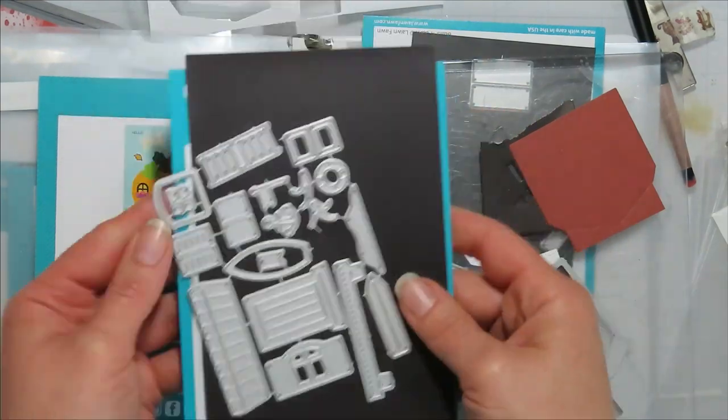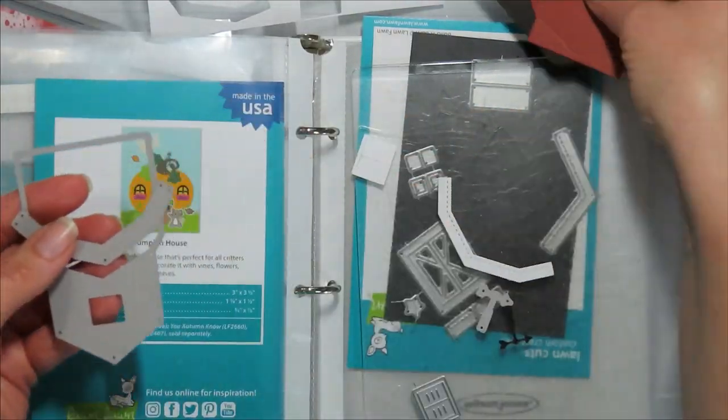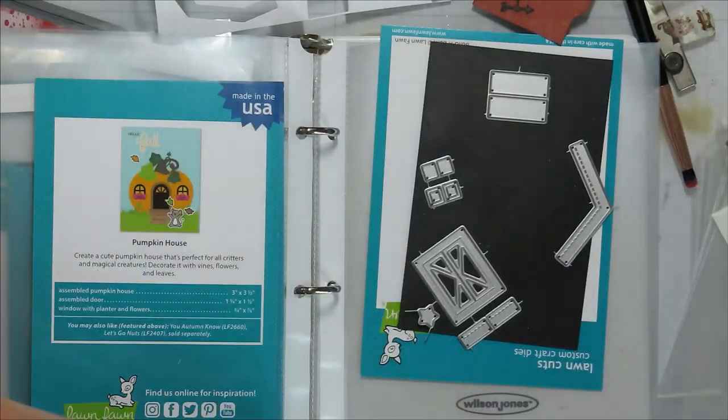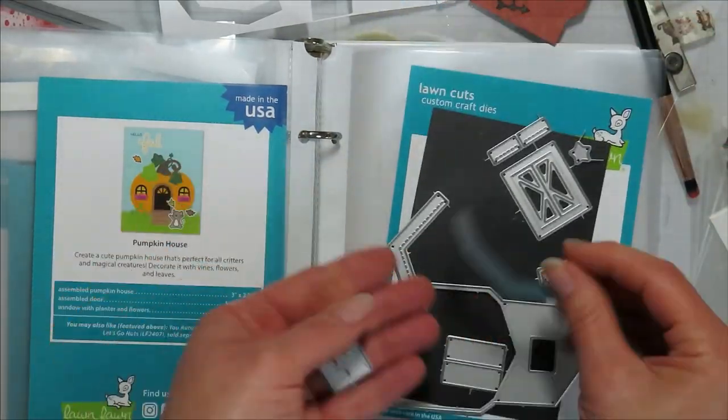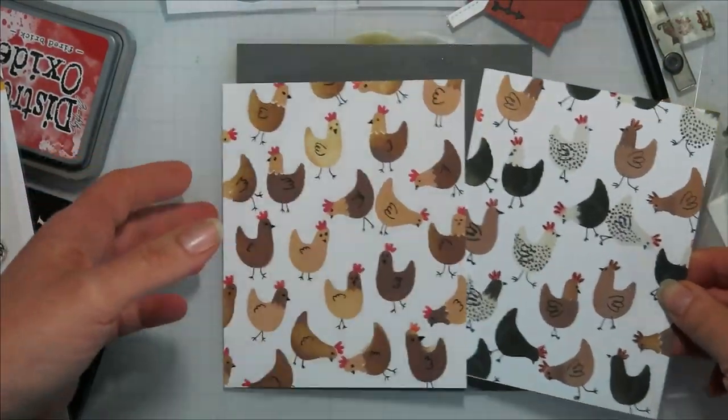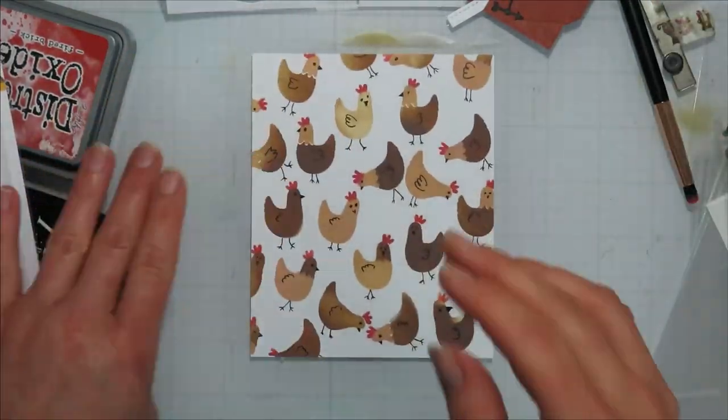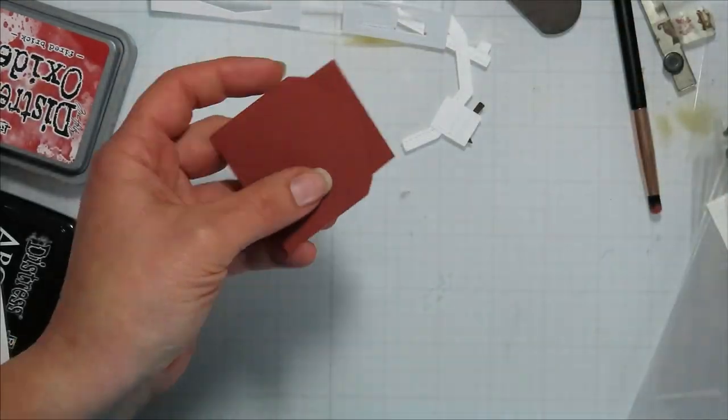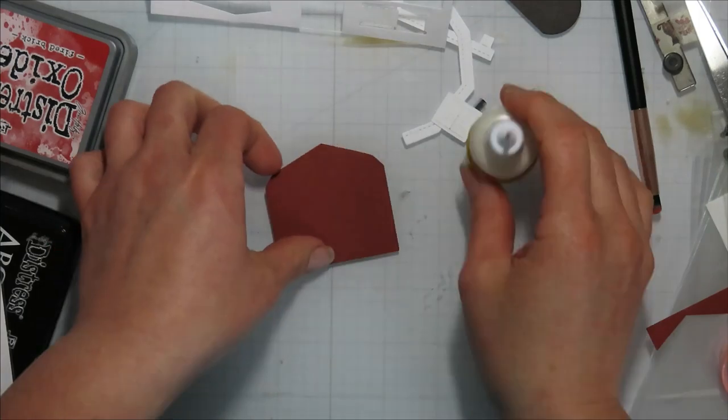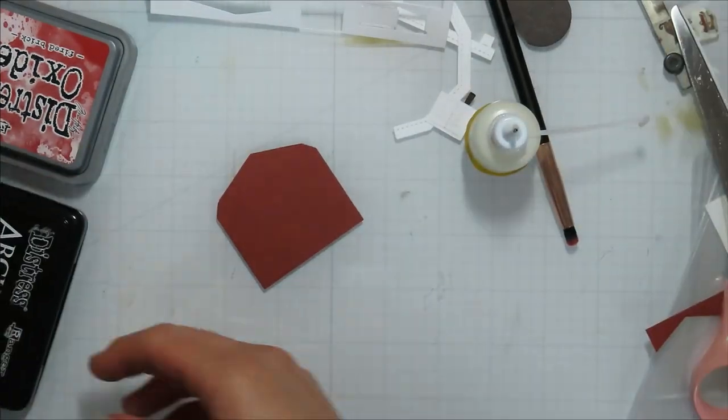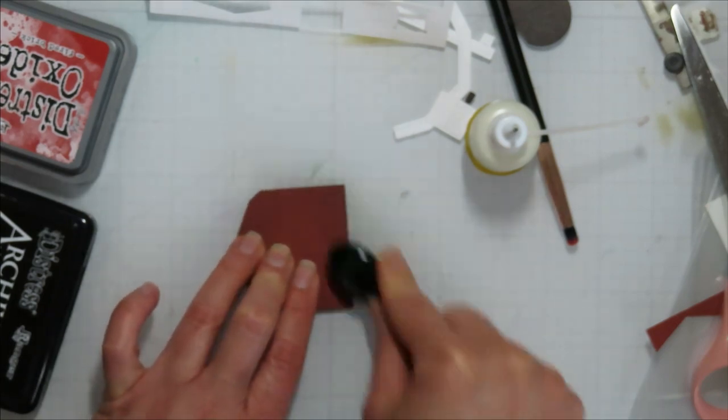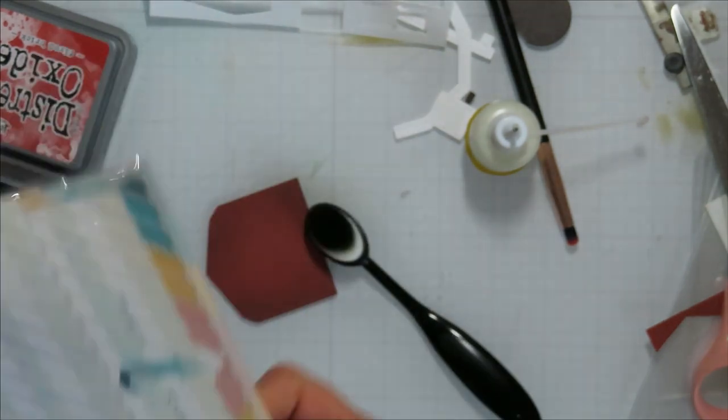Now for my cards. So for one, I had just picked up the Lawn Fawn Build-A-House Beach add-on. And when I saw it, all I could see was the stilts that the beach house is on. And I'm like, ooh, I can build a chicken coop with that. So of course, that's where I went with this one. I did bring in the Build-A-Barn set from Lawn Fawn as well, cut off the top of my barn and just using that bottom portion.